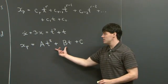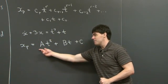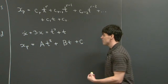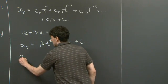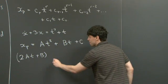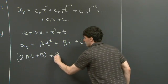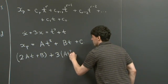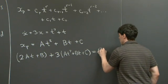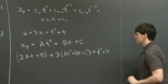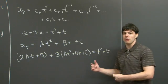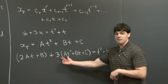Now we substitute this into the differential equation and choose our a, b, and c to construct a solution. Taking its derivative, we have 2at plus b, and then 3 times (at squared plus bt plus c). We want this to equal t squared plus t. The only way the left-hand side equals the right-hand side is if the coefficients in front of each polynomial power are the same.